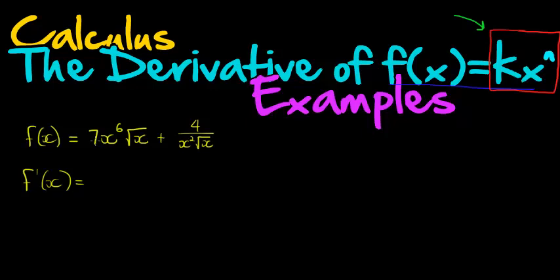We can see we don't have, and the idea is to get kx to the power of n for every expression. Here we don't have that. We've got two x's. But that's not a problem because we can write it as 7x to the power of 6 times x to the power of 1 half.